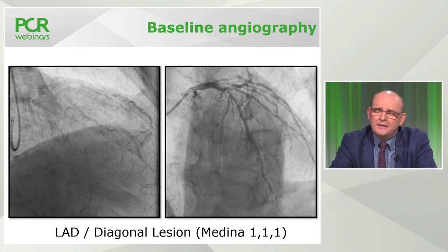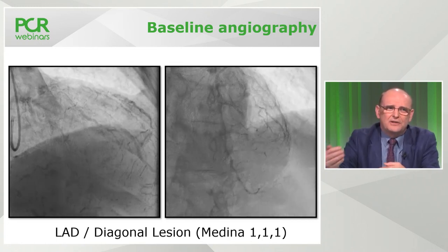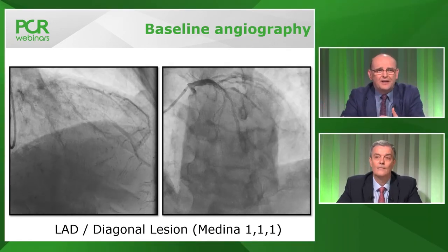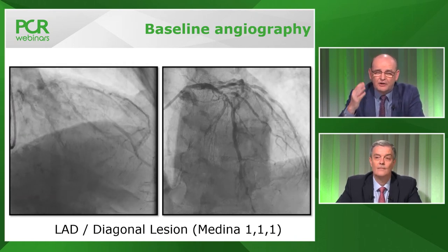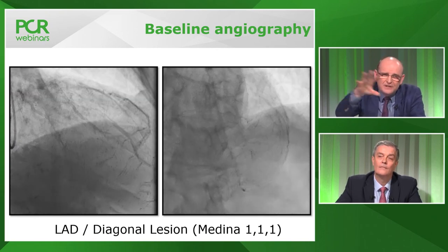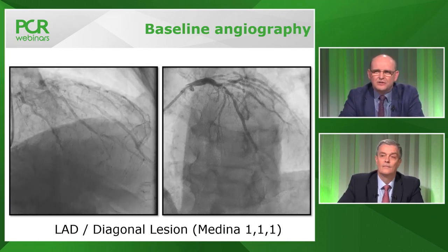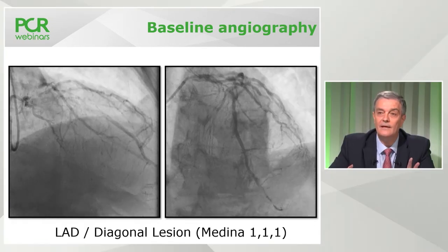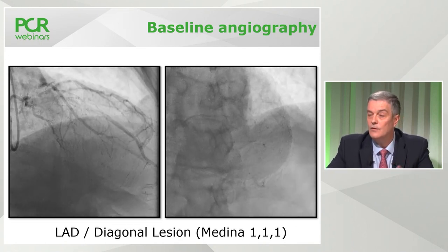The other thing which might favour DK Crush is the difference in size of the vessels. Culotte is also slightly more difficult if you've got a smallish diagonal and a big main. So there are two features: the ability to maintain control of the bifurcation — making sure I've got flow down both branches at all times in this patient with an impaired ventricle — and in particular, the rather critical ostium of that diagonal, which does look challenging to leave alone. So, plan a two-stent technique upfront.